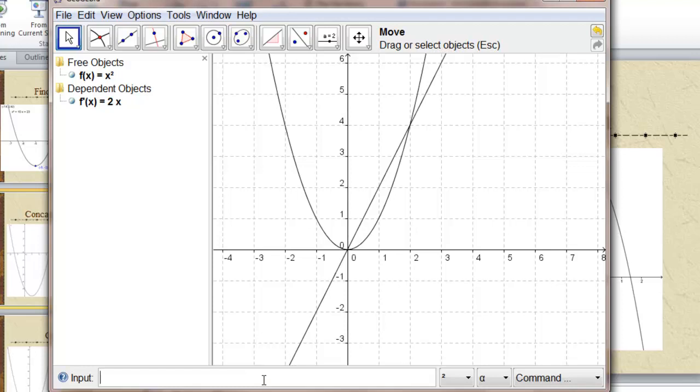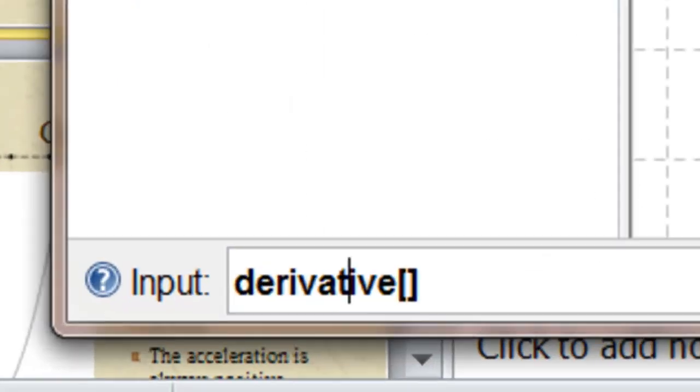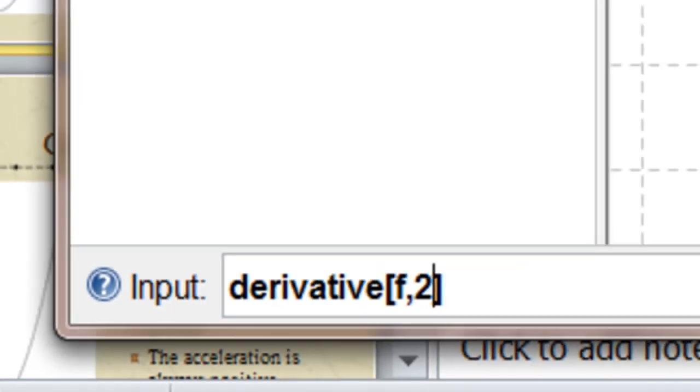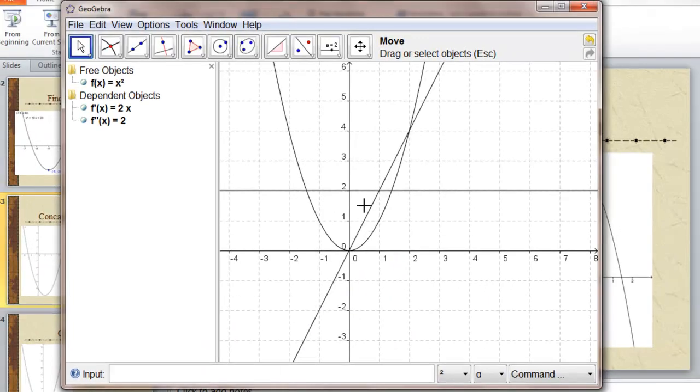So the derivative of f, and it's the second derivative, is there. It's always 2. The second derivative of our parabola is always positive.